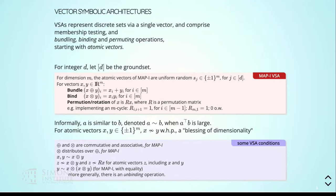What these are about, boiled down in terms we'd use, is ways of representing discrete sets using a single vector, on which you can do membership testing. There are also operations you can do on that vector or on two vectors: bundling, binding, and permuting. You can represent a discrete set with a characteristic vector of that set.